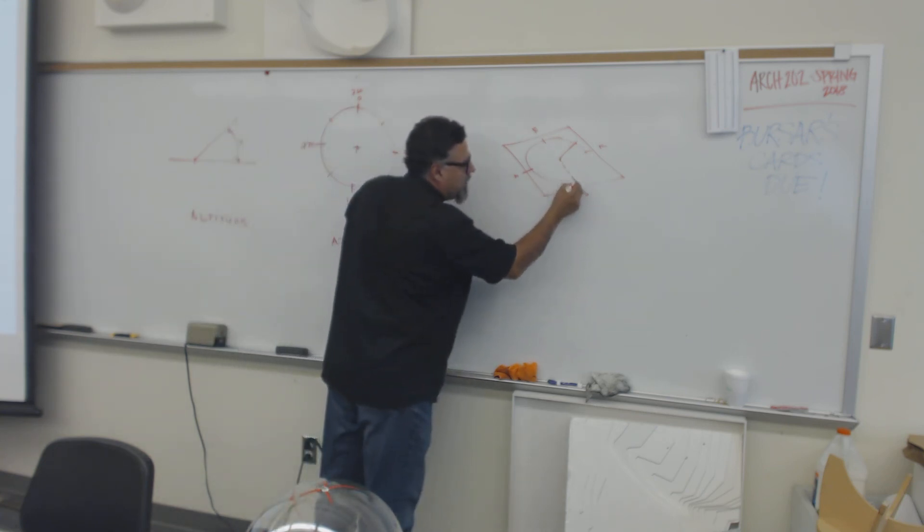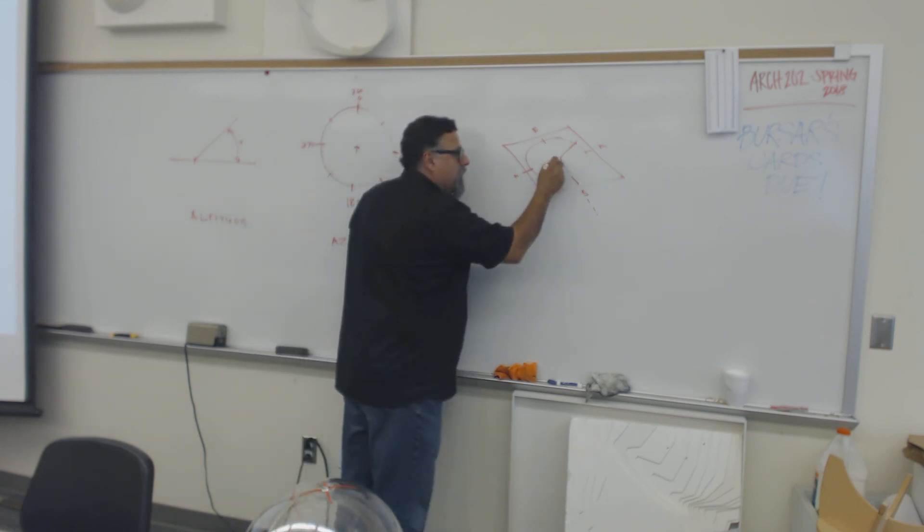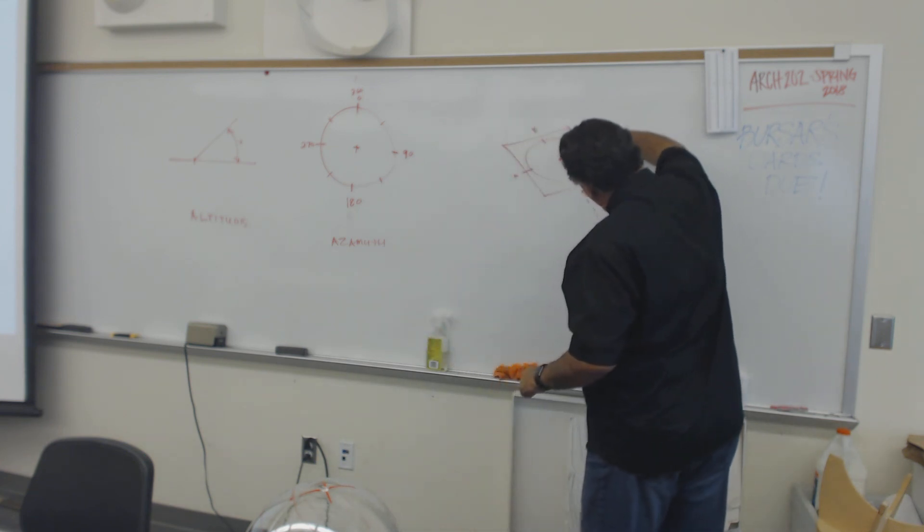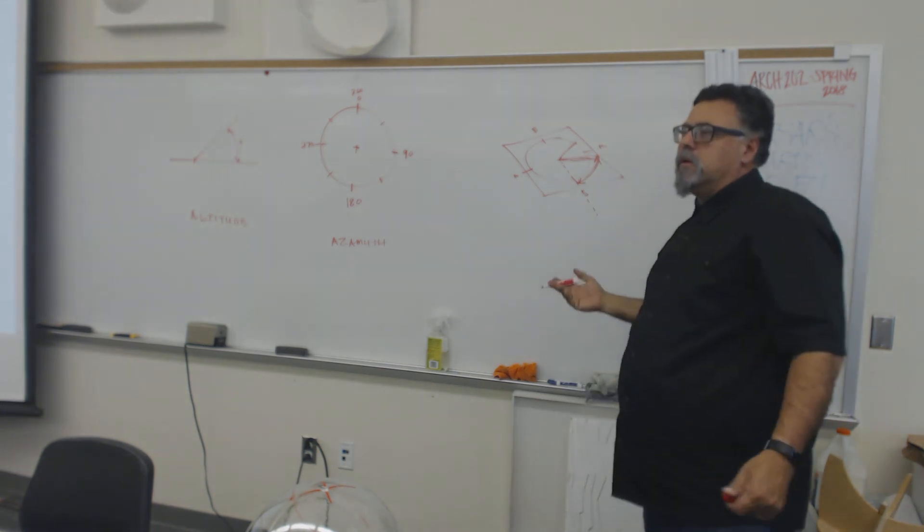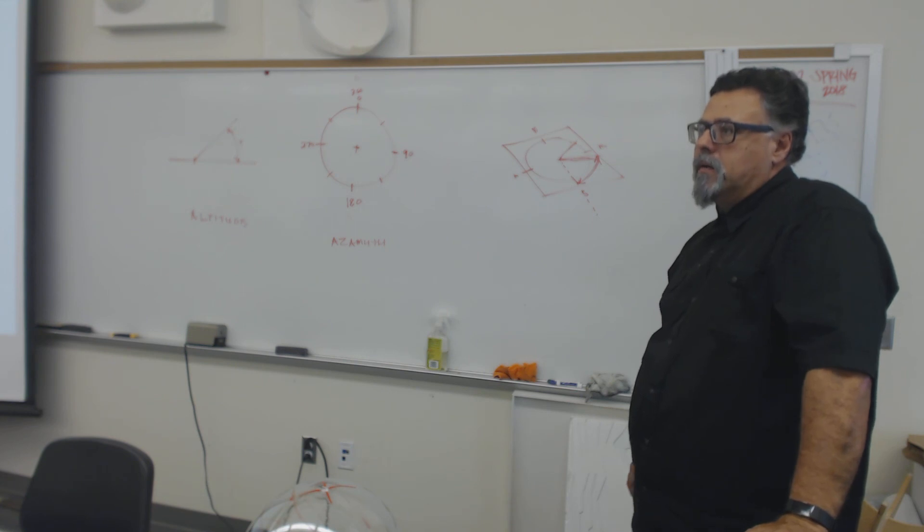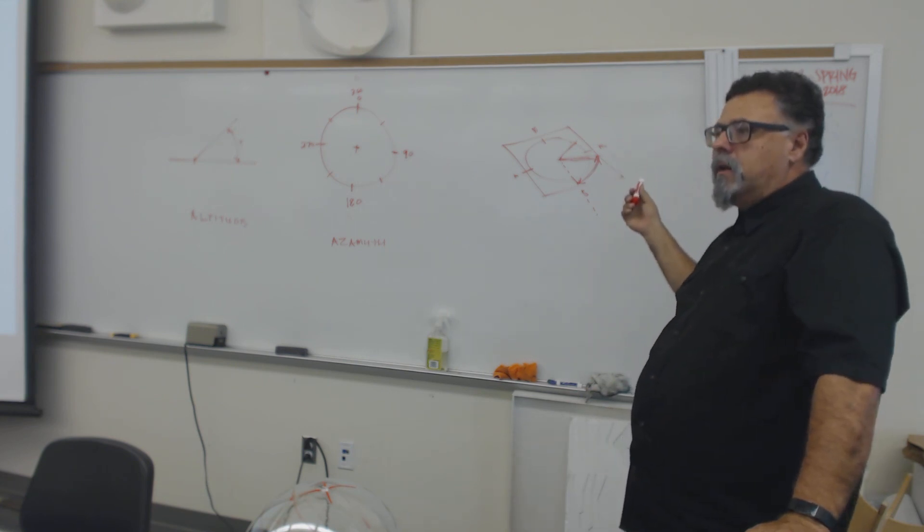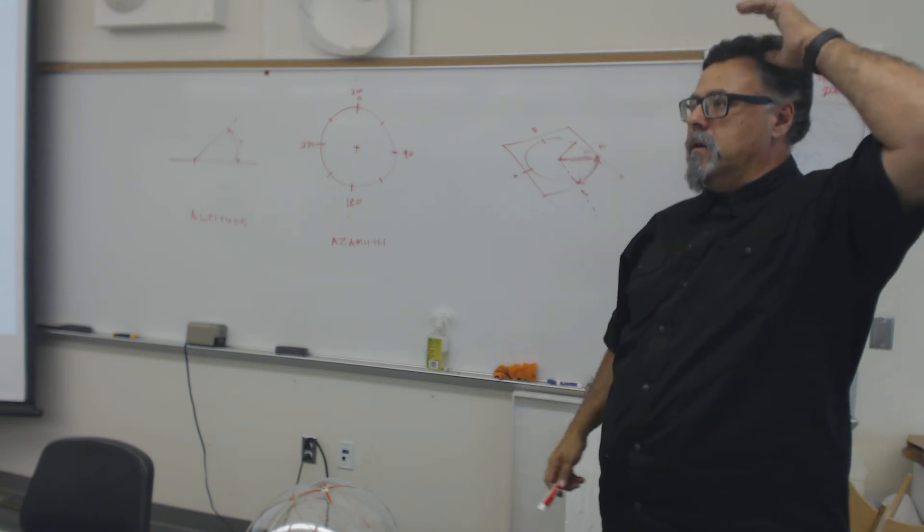Now let's do altitude. Altitude is measured vertically from there. And that's not a very good three-dimensional drawing. But altitude is coming up from there. And altitude could be, I don't know, 45 degrees or 52 degrees or something like that. So you have azimuth and altitude, and those two things combined allow you to position yourself anywhere or position any heavenly body.